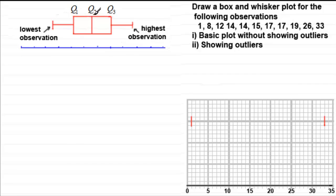For Q2, the middle value: count up how many observations you've got — in this case we've got 11 observations. Add 1 to get 12, then divide by 2, giving 6. So we're looking for the sixth value in the list. Counting through: 1, 2, 3, 4, 5, 6 — that is 15. So we mark on Q2, the median, at 15.